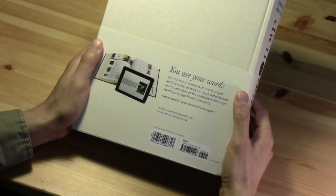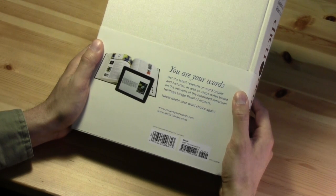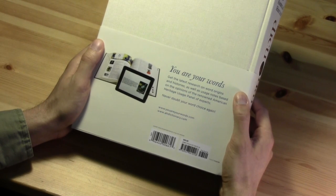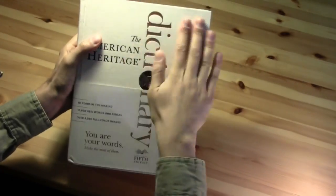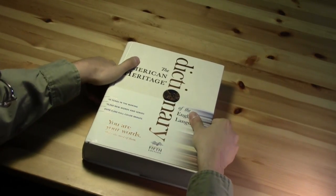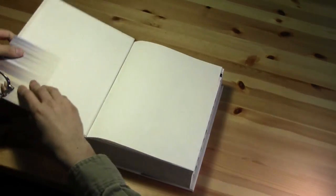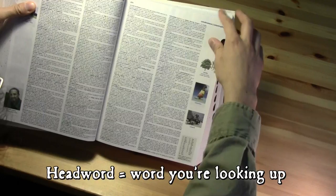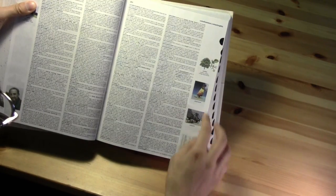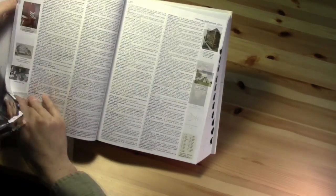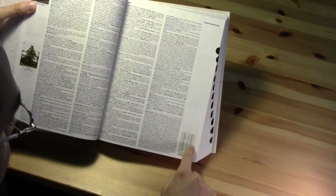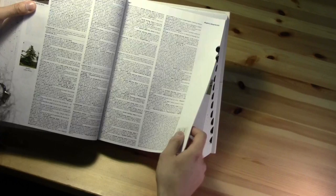But on the descriptive side, they do also say, get the latest research on word origins and histories. So that kind of balances those two. It's a nice cloth bound cover. Let's open it up. The head words themselves are printed in blue and the margins are used for full color images, as well as additional information for pronunciation.